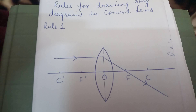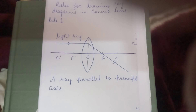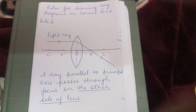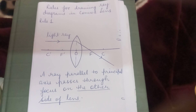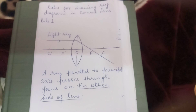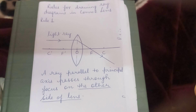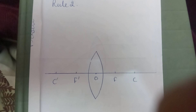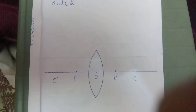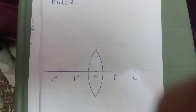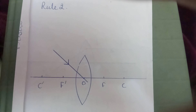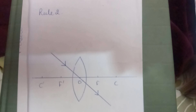Rule two: a ray passing through the optical center of the lens goes straight without bending.